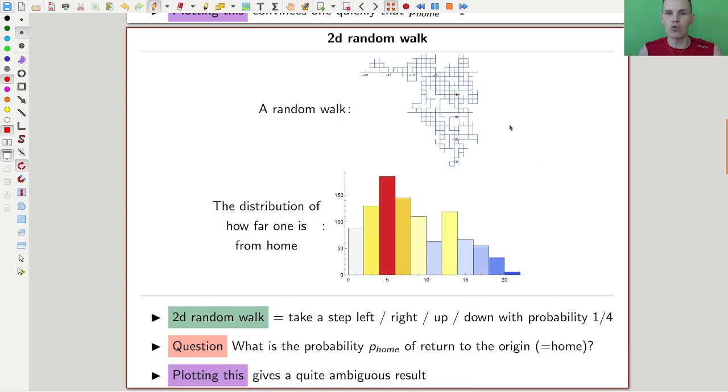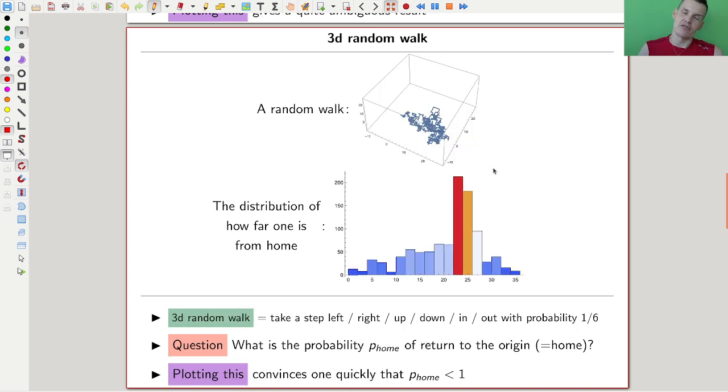Similarly, a 2D random walk, well, you can go in all four directions with equal probability. So the random walk will look a little bit like this. We will run that live, and you can do a histogram as well. And if you really do that, it kind of gets a bit ambiguous. I'm not quite sure. So we are still interested in the homecoming probability, but it's not so clear to me if you just do it on the machine.